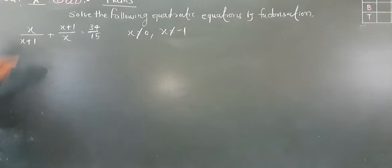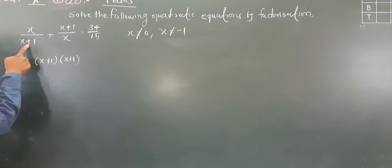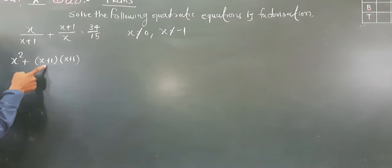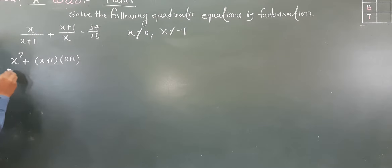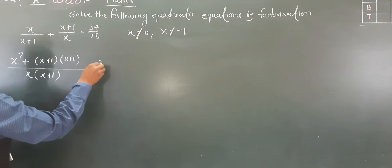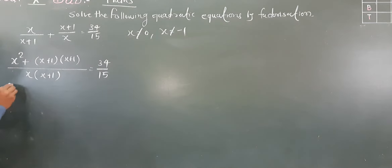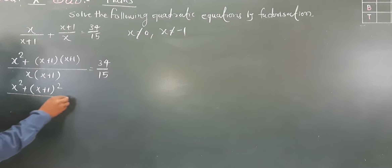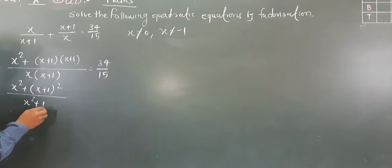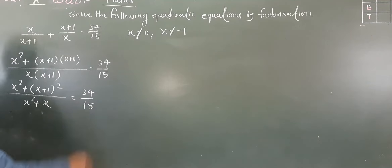We multiply: x into x gives x², and (x+1) into (x+1) gives (x+1)², so the left side becomes x² + (x+1)² divided by x(x+1), which equals 34/15 on the right-hand side.